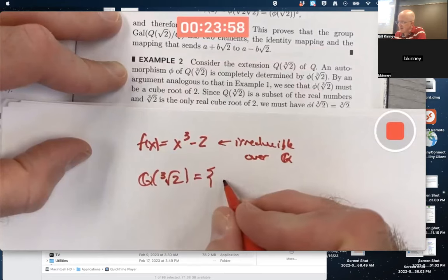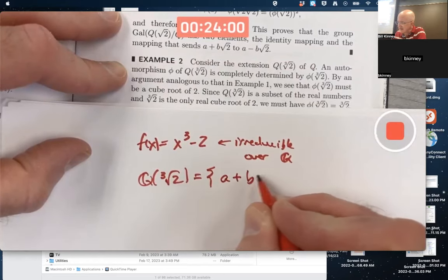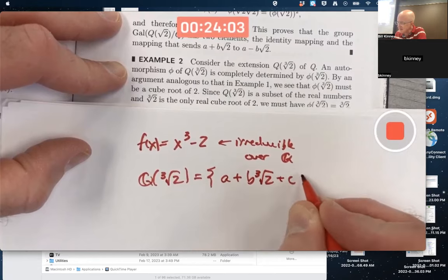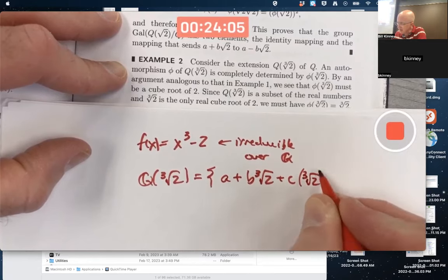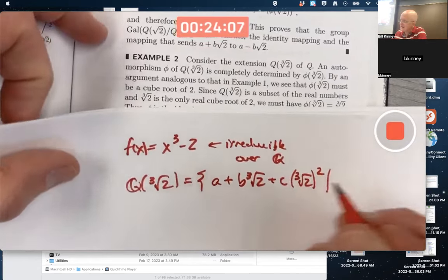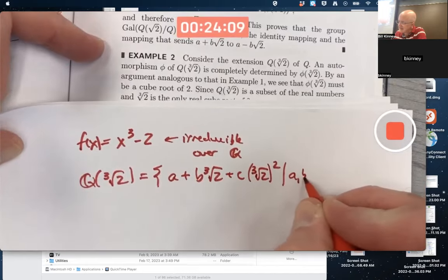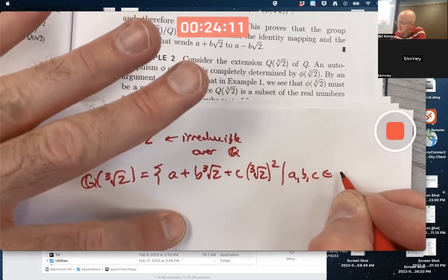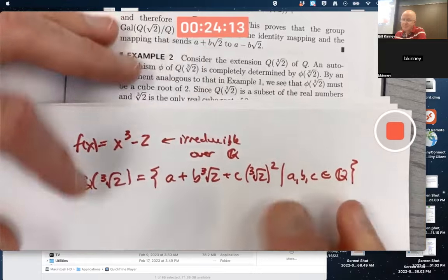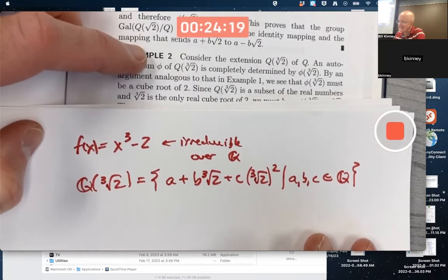Everything in here could be written as a plus b times cube root of 2 plus c times cube root of 2 squared as a, b, and c vary over the rationals. That's what that field extension is.